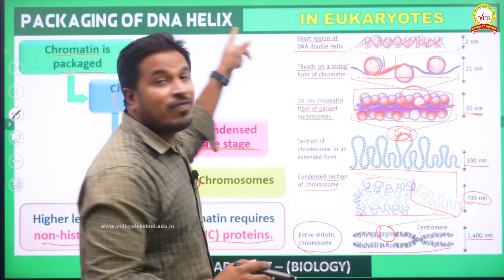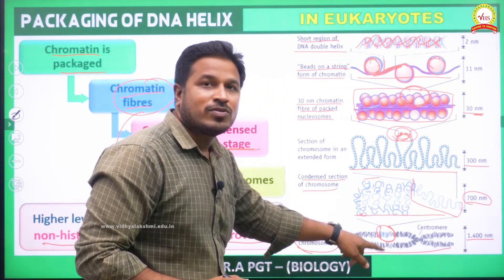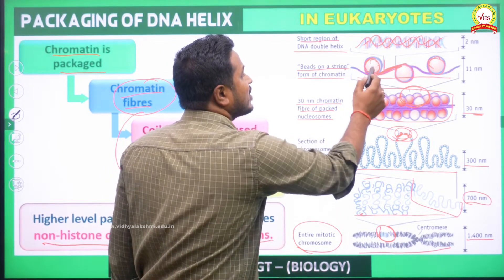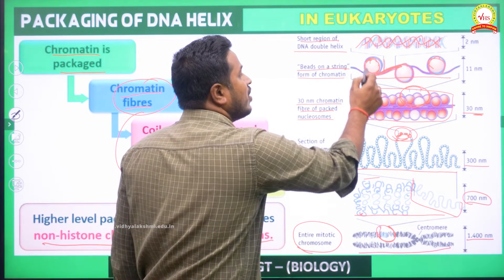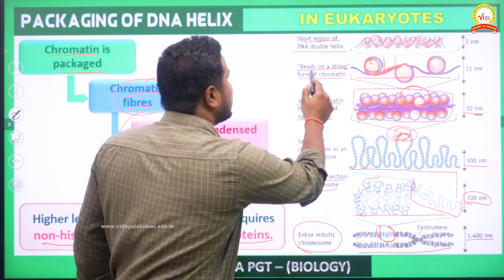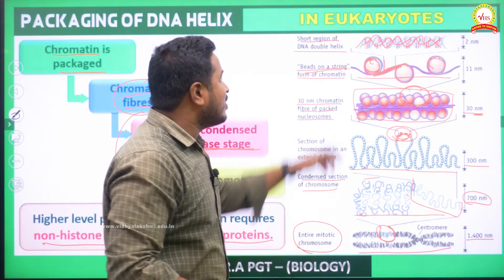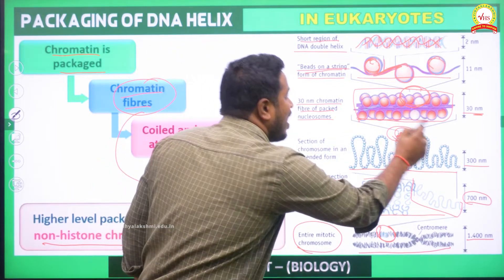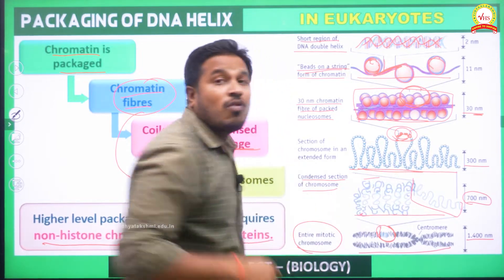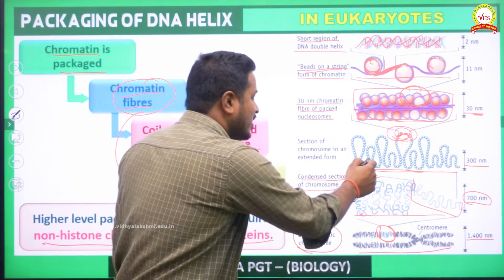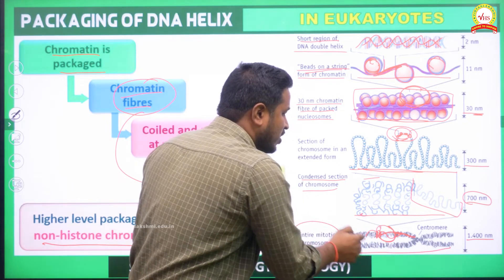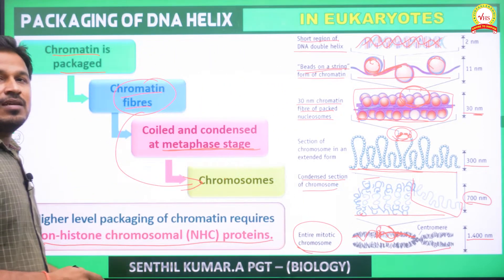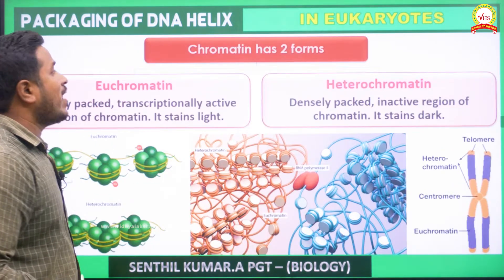This is the overall packaging of the DNA helix in a chromosome. The DNA is condensed, wraps around the histone octamer to form a beads-on-a-string structure, which condenses to form a fiber-like structure, which again condenses to form chromatin, and the chromatins condense to form the chromosomal structure.